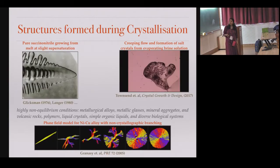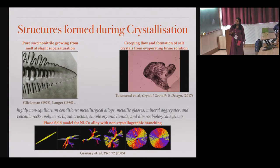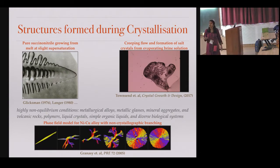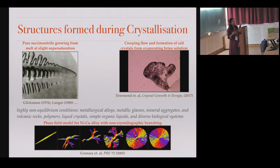You must be aware of several types of crystals — of course ice crystals and snowflakes are something that we all know about. There is a lot of literature on crystallization in melts. This is an image of a succinonitrile crystal growing from its melt.